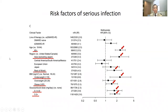Risk factors for serious infection include advancing age, region of enrollment, abnormal body mass index, and concomitant glucocorticoid dose. There were 11 TB cases, all occurring with 4 mg baricitinib in endemic regions.